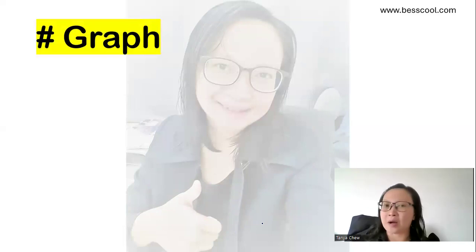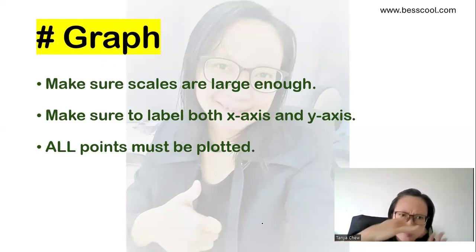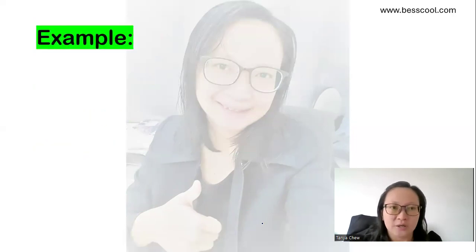The next one is about the graph. So whenever you plot a graph, you make sure that the scales are large enough. Because the graph paper will be given. You don't want to plot a very small graph because that will be very inaccurate. And you have to make sure that you label both x-axis and y-axis. And again, most importantly, all the points have to be plotted correctly on your graph paper because they will have to check on that.